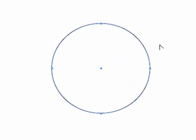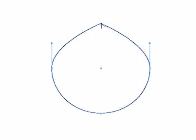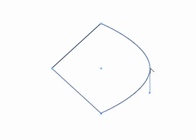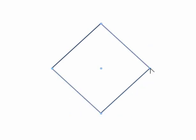I can also use the convert direction point to convert smooth curved points into corner points. Come over here and just click. Click. Click. Click. And now I've got corner points where they once were curved.